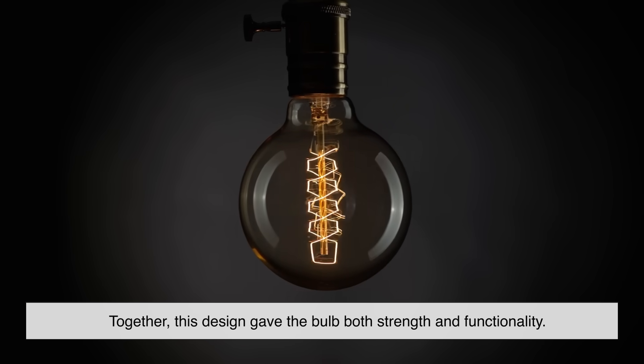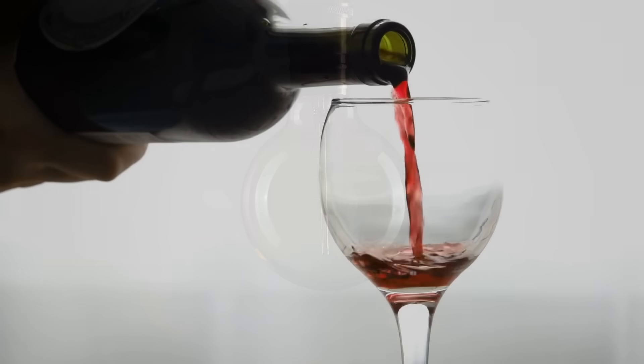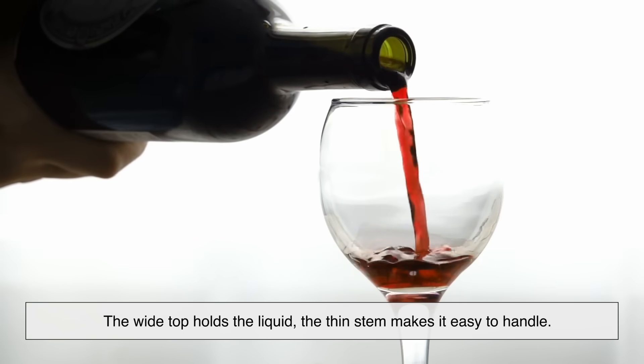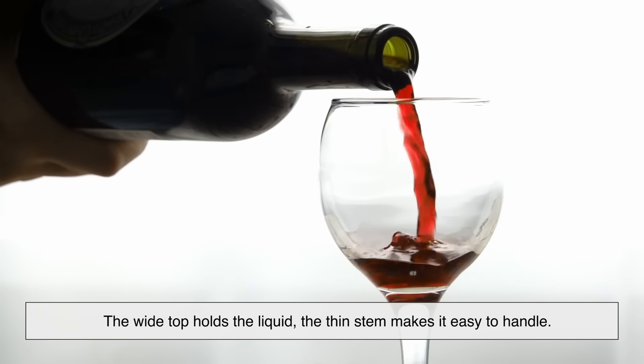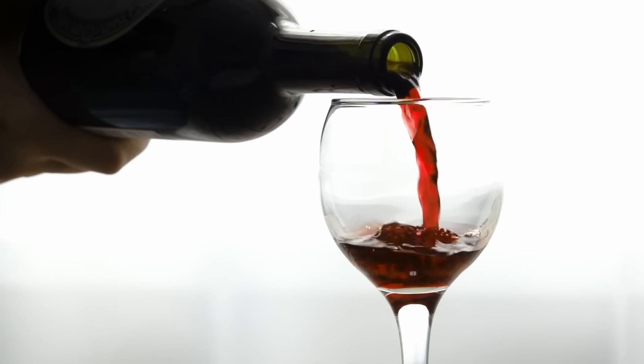Together, this design gave the bulb both strength and functionality. Think of it like a wine glass: the wide top holds the liquid, the thin stem makes it easy to handle. The pear-shaped bulb worked on the same logic.